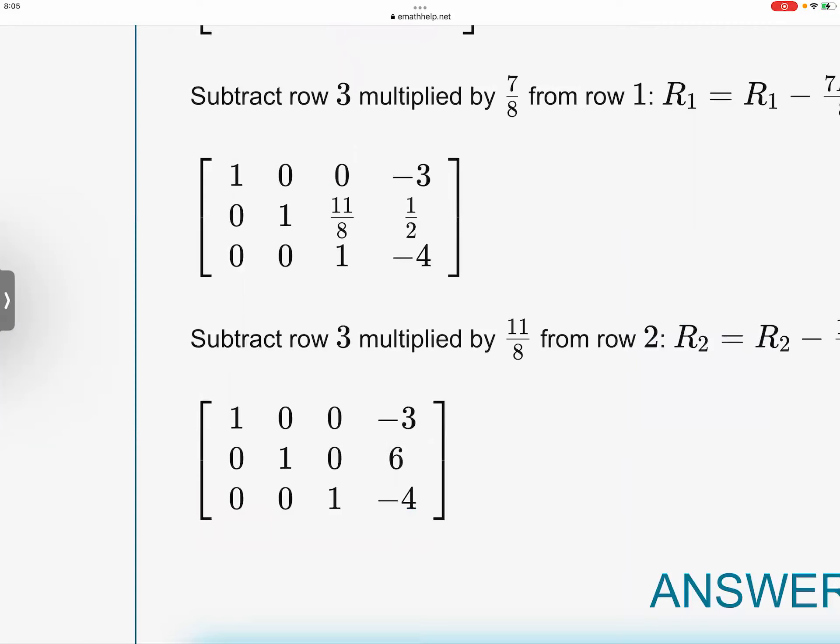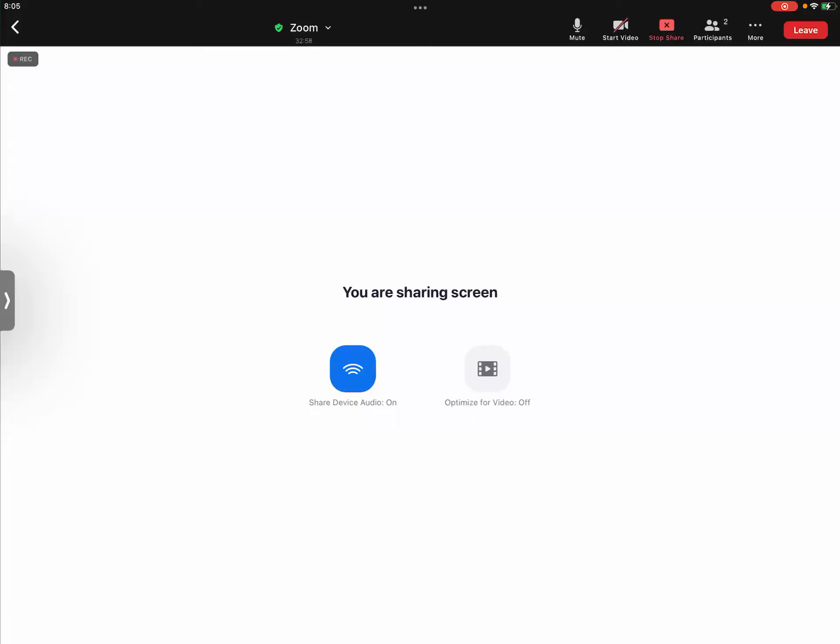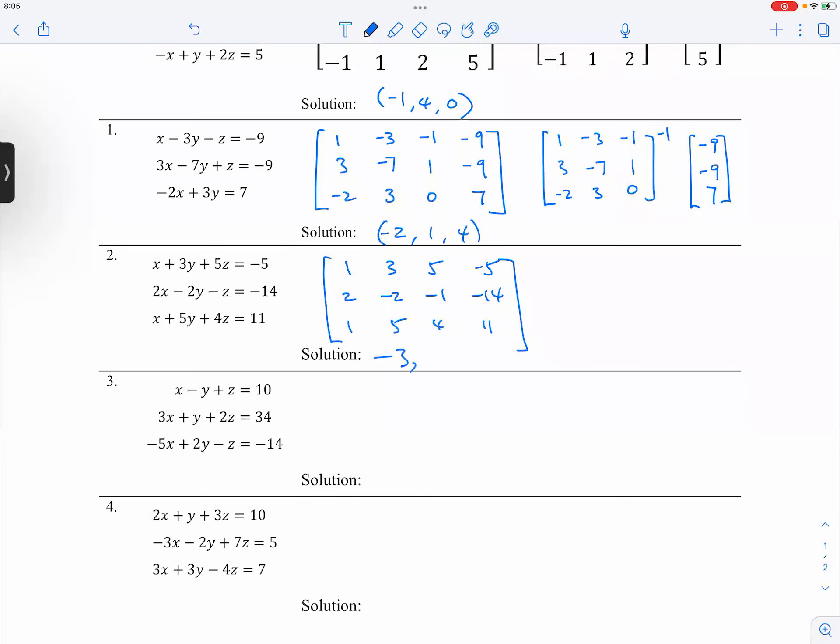So you can get the answer right here. And you just say, oh, I know what they are. It's negative three, six, and negative four. So negative three, six, and negative four. Do you get the same answer for number two? Yes?